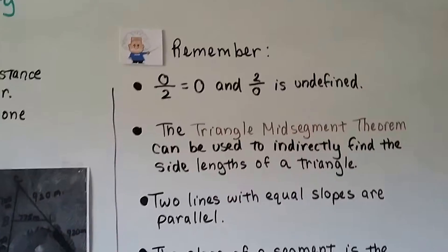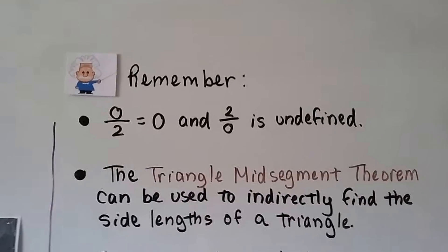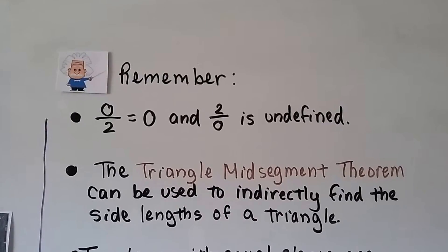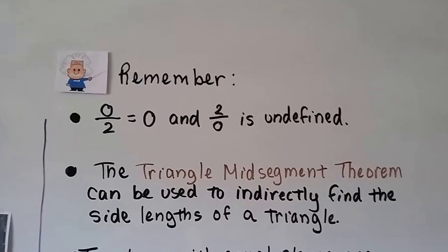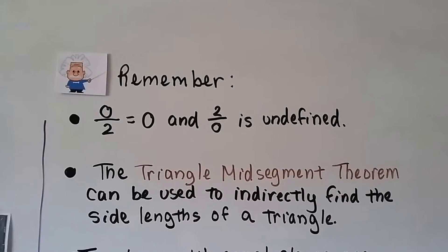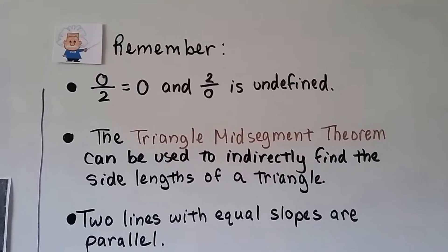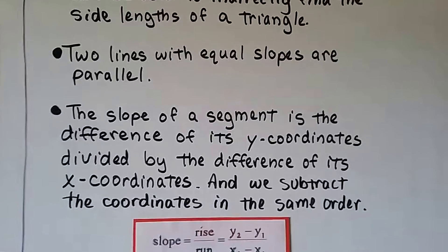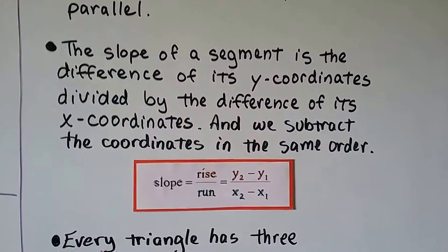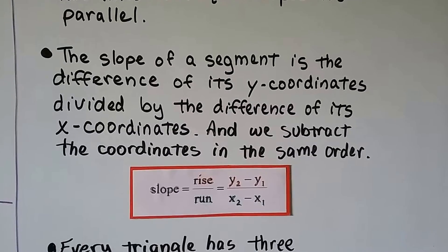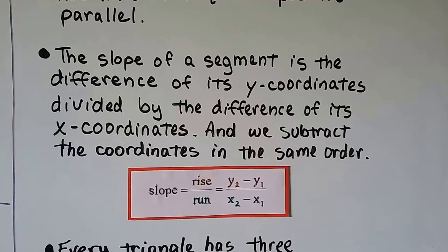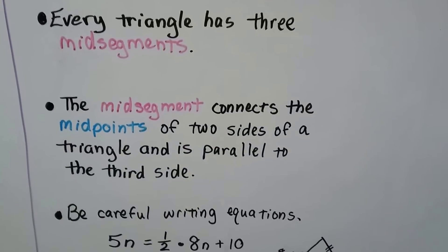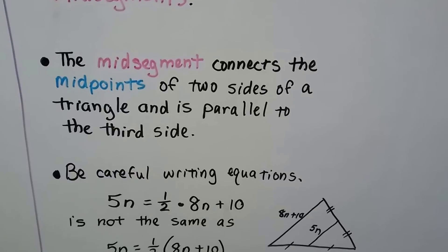Here's what you need to remember: when you have a numerator of 0 and any number for a denominator, it equals 0. But if you have any numerator and a denominator of 0, it's undefined. The Triangle Mid-Segment Theorem can be used to indirectly find the side lengths of a triangle. Two segments with equal slope are parallel, and the slope of a segment is the difference of its y-coordinates divided by the difference of its x-coordinates — subtract the coordinates in the same order. Every triangle has 3 mid-segments, and the mid-segment connects the midpoints of two sides of a triangle and is parallel to the third side.